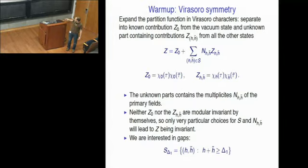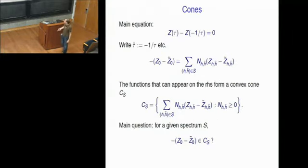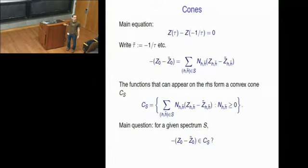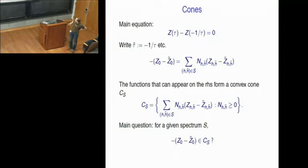We're mainly interested in gaps. What we're trying to see is whether it's possible to have a spectrum where the total conformal weight h plus h-bar is bigger than delta_1. The main equation we're investigating is simply the statement that the partition function should be invariant under the S-transform. For ease of notation, I'll denote minus 1 over tau by tau-tilde, and all the corresponding objects also with a tilde.